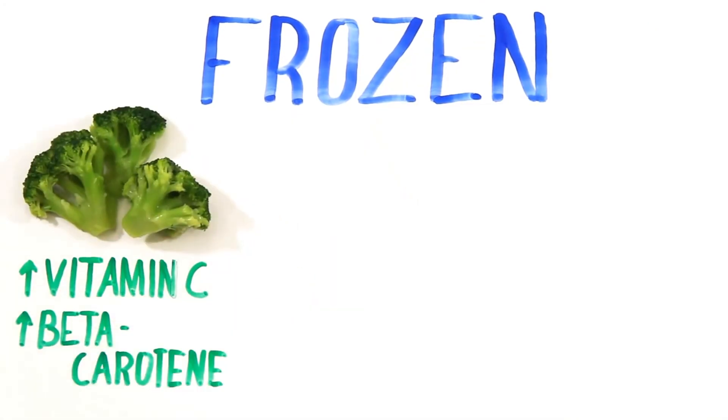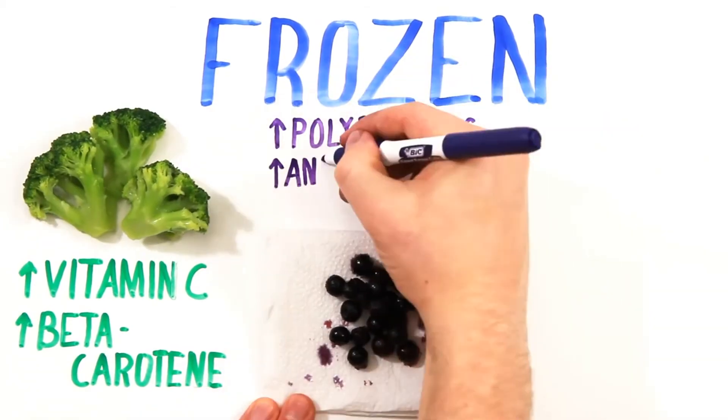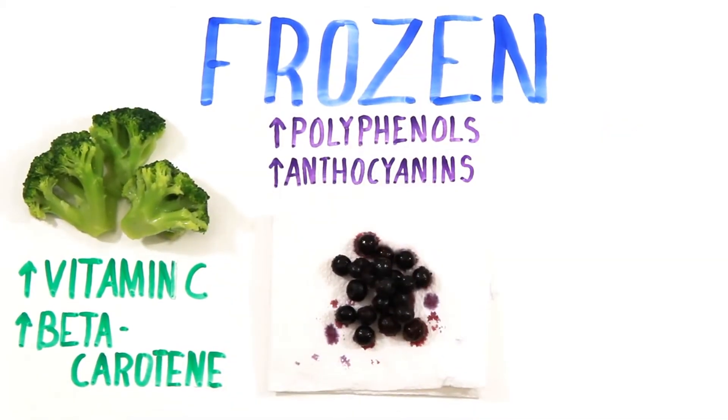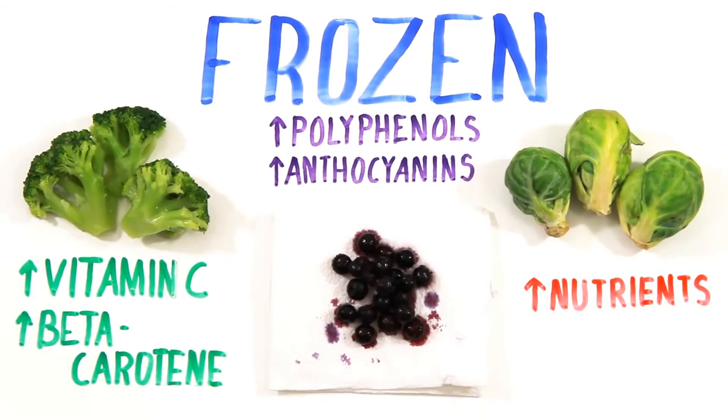In a series of studies, after three days of storage, frozen broccoli had higher levels of vitamin C and beta-carotene, frozen blueberries were much higher in polyphenols and anthocyanins, and frozen sprouts scored higher on all nutrient measurements.